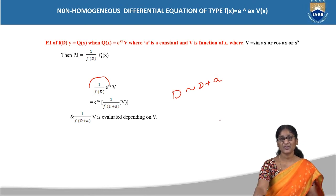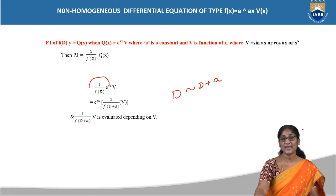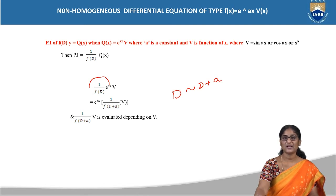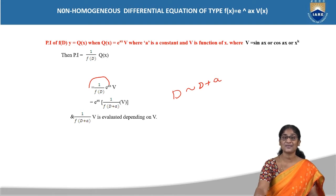In the last classes we have seen the particular integral when Q(x) is e^(ax) alone. In the second case, we have seen when Q(x) is sin(ax) or cos(ax). In the third case, we have seen when Q(x) is x to the power of n — exponential, trigonometric, and binomial expansions respectively. Now this is the fourth case in higher order differential equations where Q(x) is a product of two different functions, specifically e^(ax) into v(x), where v(x) can be sin(ax), cos(ax), or x to the power of n.